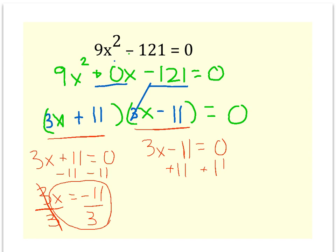Same as over here, we add 11, 3x equals 11, you divide both sides by 3, you get x equals a positive 11 thirds.